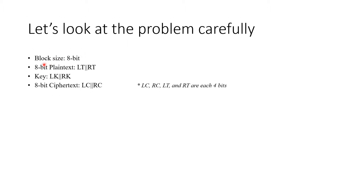We are given that the block size is 8-bit. Also, the 8-bit plaintext is a combination of LT and RT, where L is left and R is right. The key is the combination of LK and RK. The 8-bit ciphertext is a combination of LC and RC. Note that LC, RC, LT, and RT are each 4 bits.